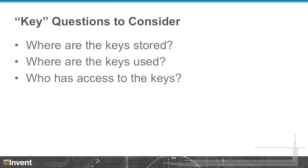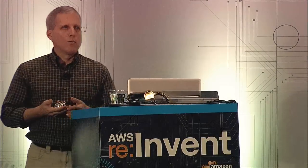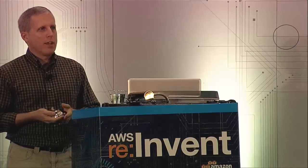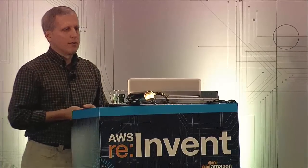Finally, who has access to the keys? Access to the keys could be the actual ability to export a key and retrieve a plain text key. It could be having the right to use a key to perform cryptographic operations. So as we talk about the various encryption capabilities in AWS, think about these questions — think about what answers you would like for your given application or your particular data type.